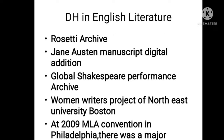Now, in English literature, what work has been done in DH? In Oxford University there have been projects like the Rossetti Archive — an archive created on the literary figure Rossetti. Jane Austen's manuscripts have been digitized. Then there is the Global Shakespeare Performance Archive, covering Shakespeare's dramas performed globally. There is also a Women Writers project from Northeastern University in Boston. At the 2009 MLA convention in Philadelphia, there was a major subfield dedicated to digital humanities. These works have been underway since the 1930s and 1940s globally, but DH emerged in India after 2018.